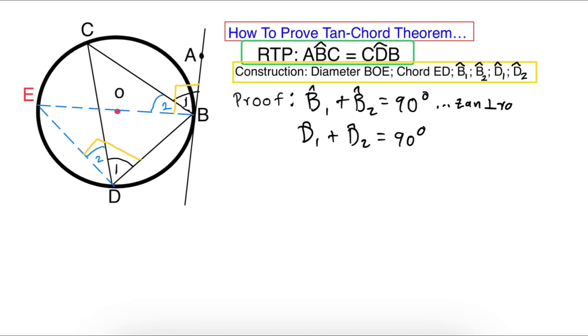Now let's look at D₁ and D₂. D₁ + D₂ will make 90 degrees. Why? Look at the constructed diameter EB, you see EB? The diameter subtends the whole angle D. So D₁ + D₂ will be 90 degrees because it is an angle in a semicircle. The reason is angle in a semicircle.